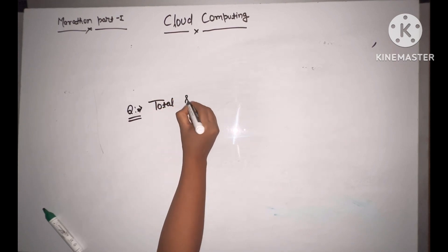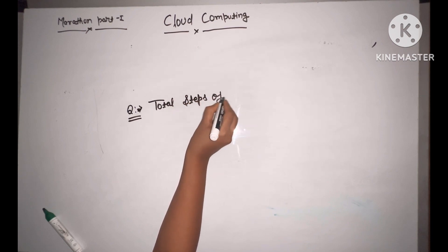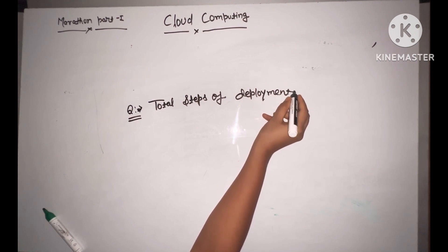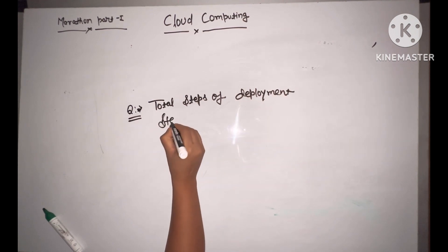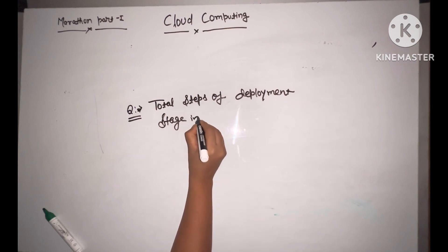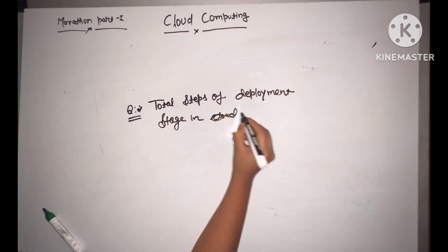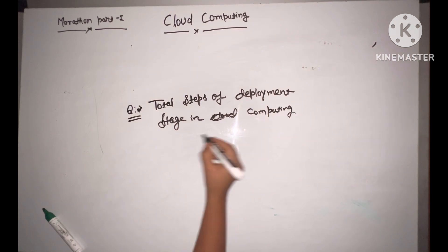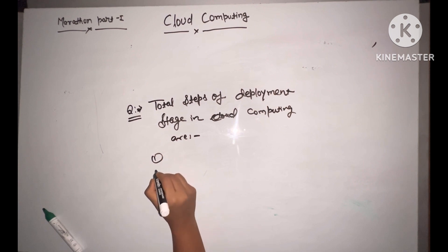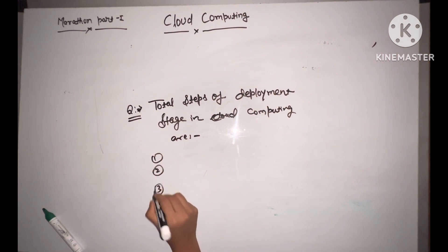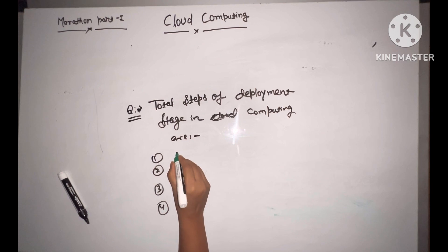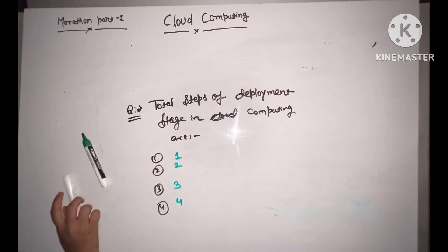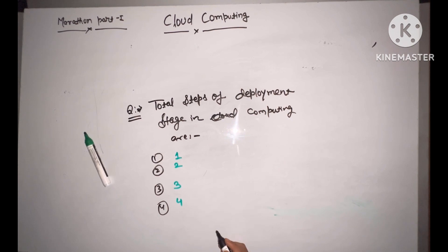Question number 15: total steps of deployment stage in cloud computing are — one, two, three, or four? The answer is four. Plus one for those who answered correctly.